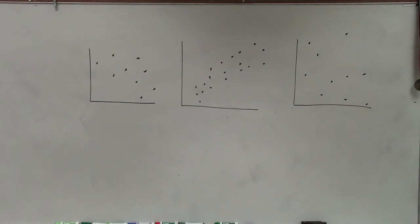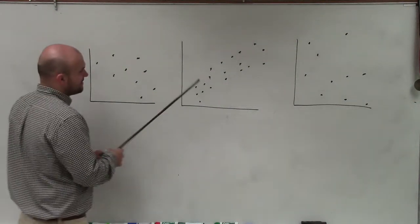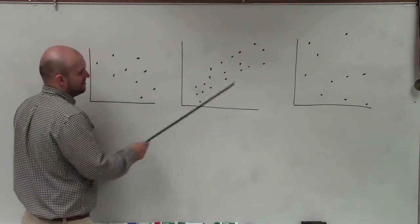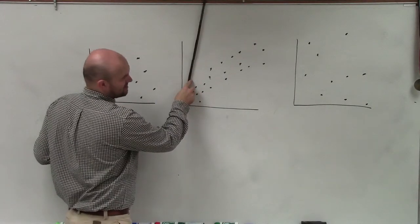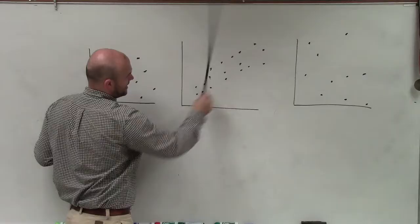To do that, we're going to want to choose a line that's going to represent the data the best. Obviously, a line like this does not represent the data, nor like this, nor like that.